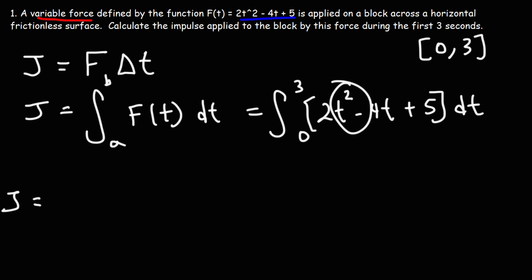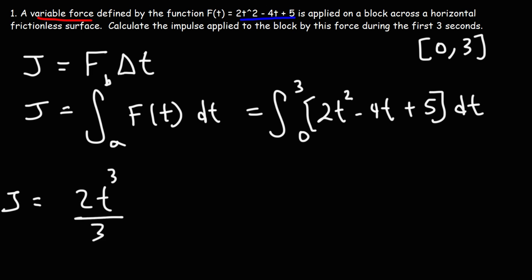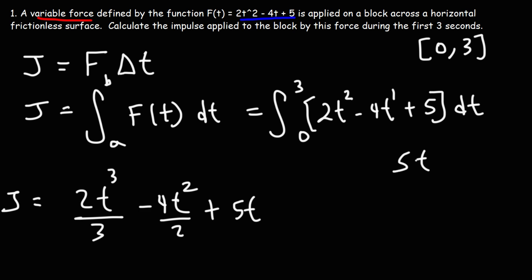The antiderivative of t² is t³ over 3 — we add 1 to 2 to get 3, then divide by that result. The antiderivative of t to the first power gives us t² over 2. For the constant 5, you just add the variable t — you can think of it as 5t⁰, and applying the power rule gives 5t¹ over 1, which is just 5t.